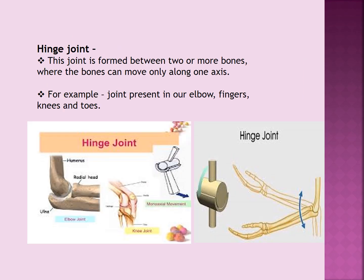Hinge joint. This joint is formed between two or more bones where the bones can move only along one axis. If you have noticed the door of your room, it also opens only in one direction. Similarly, this joint allows movement only in one direction. These joints can be found in your elbow, fingers, knees, and toes.